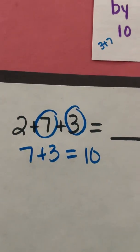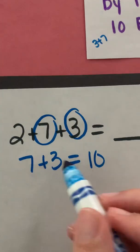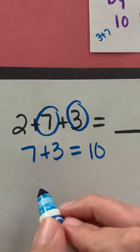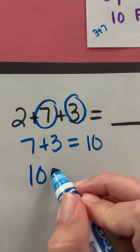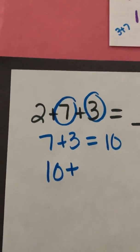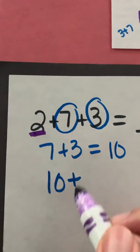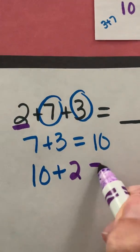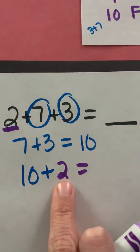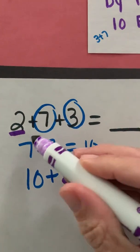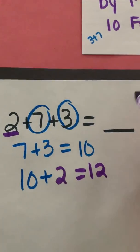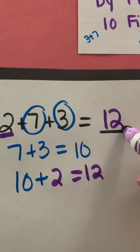All right so now I have added two of my addends together but I still have a third addend I need to add. So now I'm going to add the 10 plus the two which will then give me 10, 11, 12. So two plus seven plus three will actually give me a sum of 12.